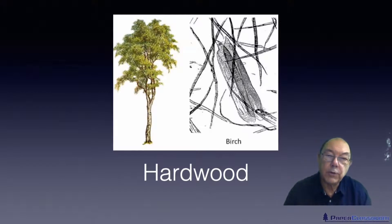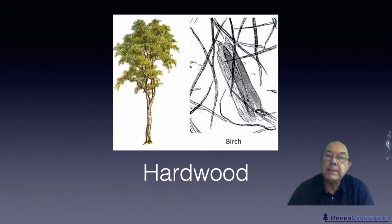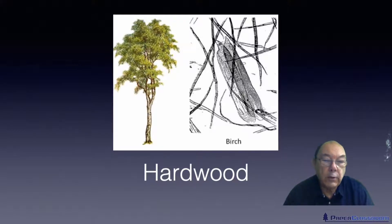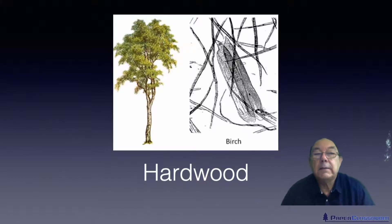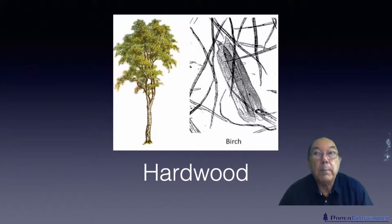One of the complications of hardwood trees is that they all have things called vessel cells or vessel elements. Every species has its own particular type of vessel element, so it's almost impossible to identify hardwood fibers — and some non-wood fibers — from the fiber itself. The way you usually do it is by looking at the vessel element, which tells you what the tree is. Hardwood fibers are typically two millimeters long. Being shorter means fewer crossovers, giving you a weaker piece of paper, but you can distribute the fibers much more evenly, which is great for improving sheet formation and the appearance of the sheet.